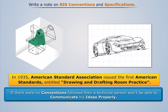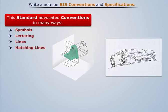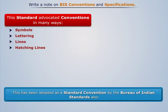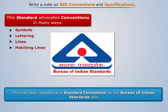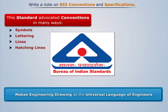So in 1935, the American Standard Association issued the first American standards entitled Drawing and Drafting Room Practice. This standard advocated conventions in many ways, for example, symbols, lettering, lines, hatching lines, etc. This has been adopted as a standard convention by the Bureau of Indian Standards also, thus making engineering drawing the universal language of all engineers.